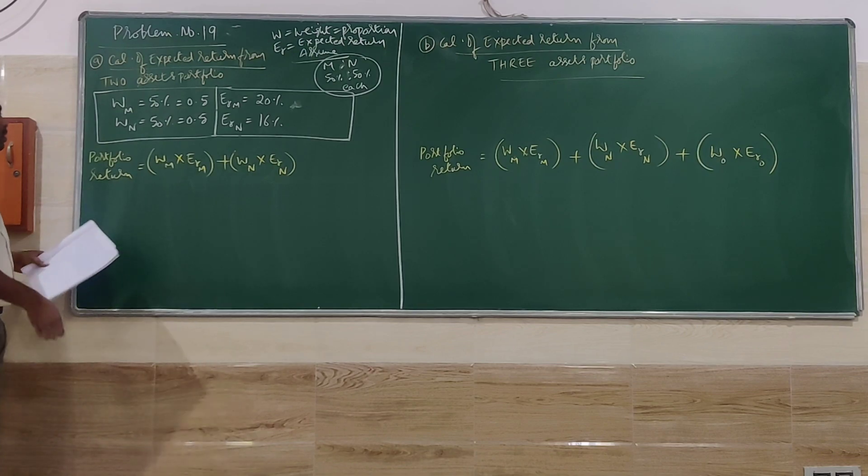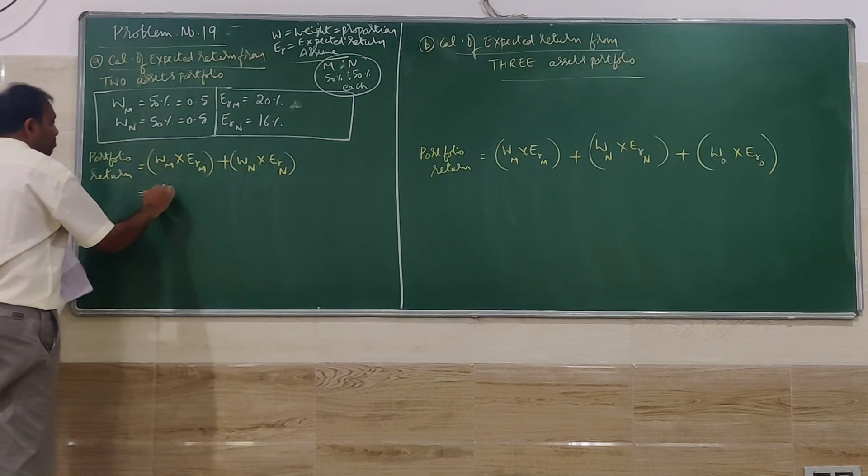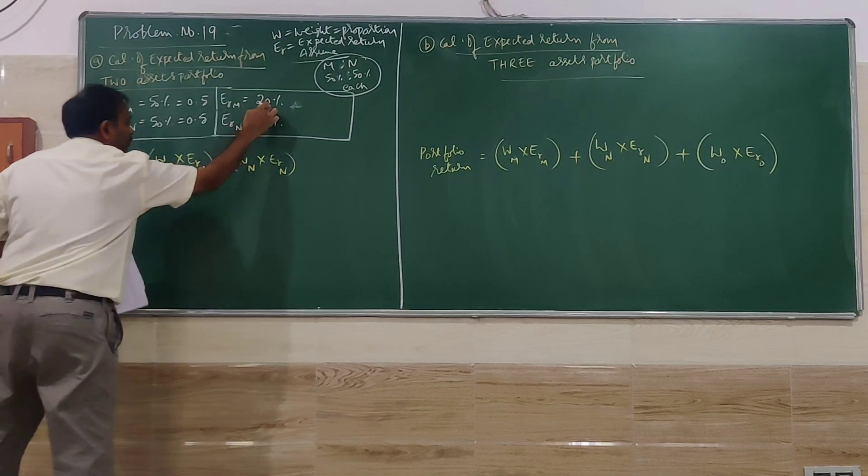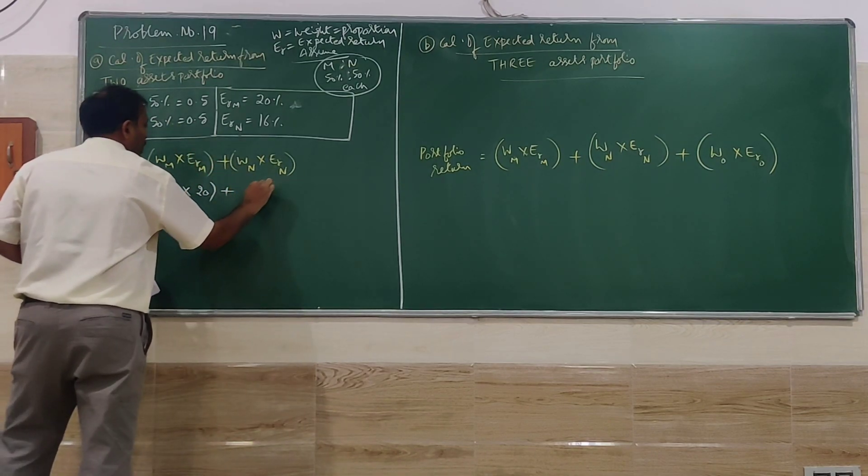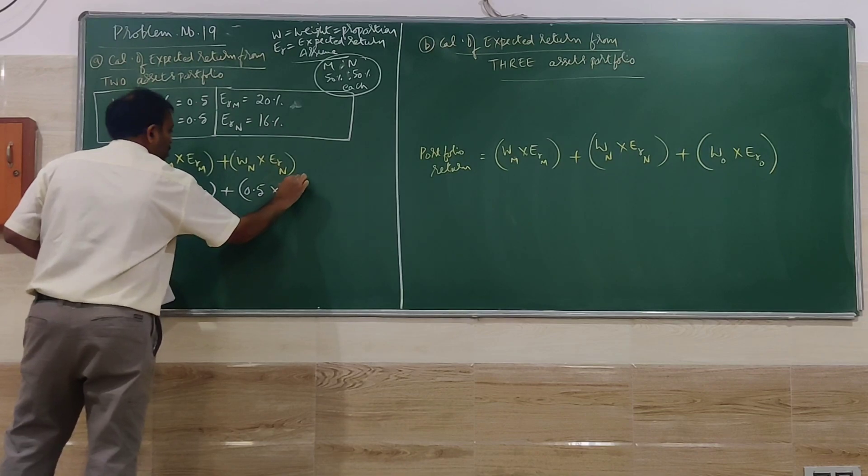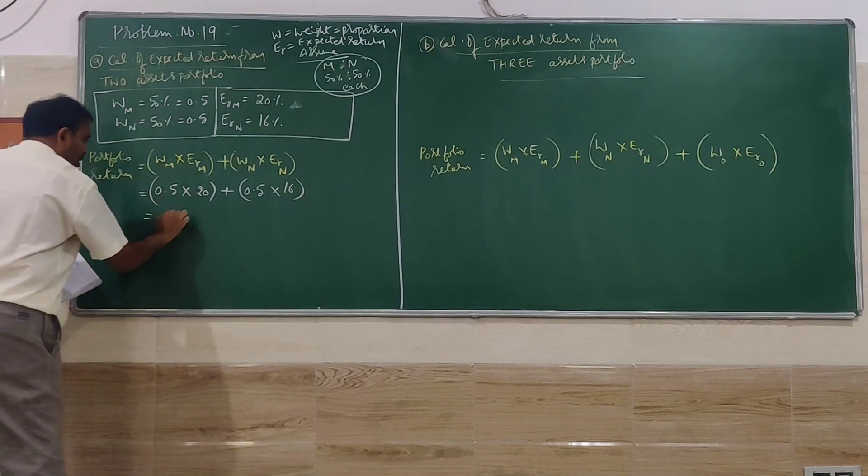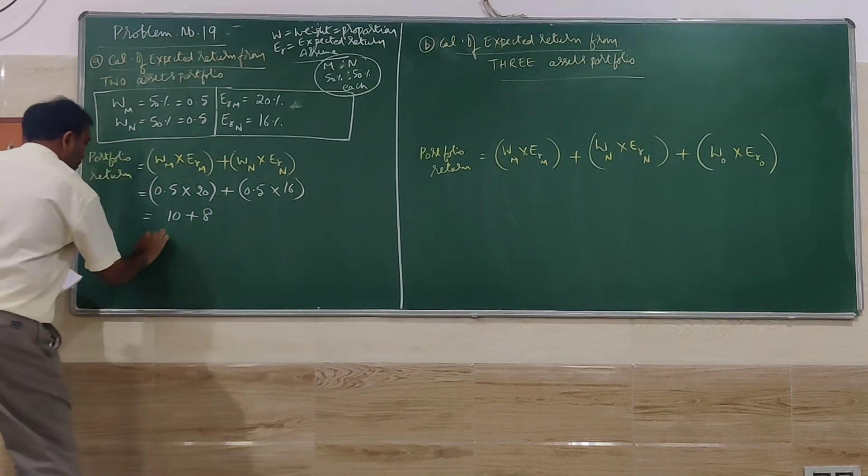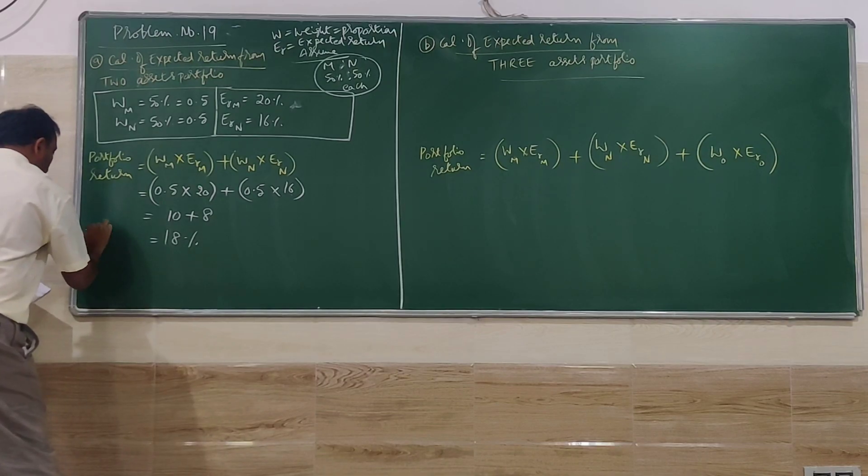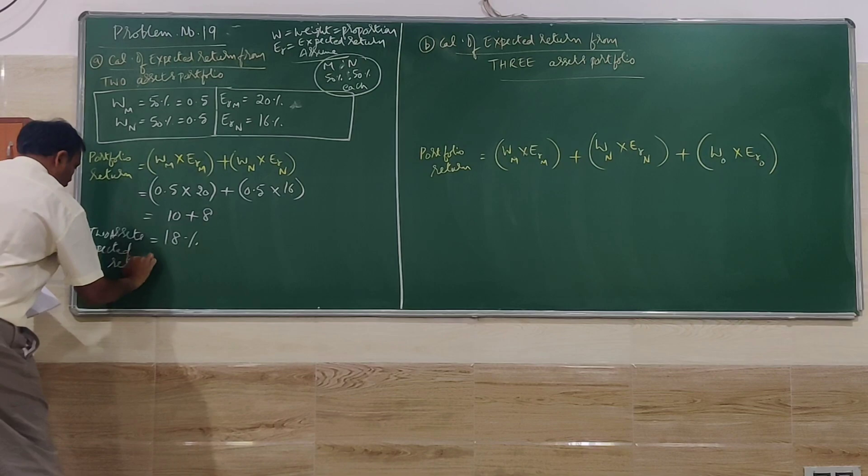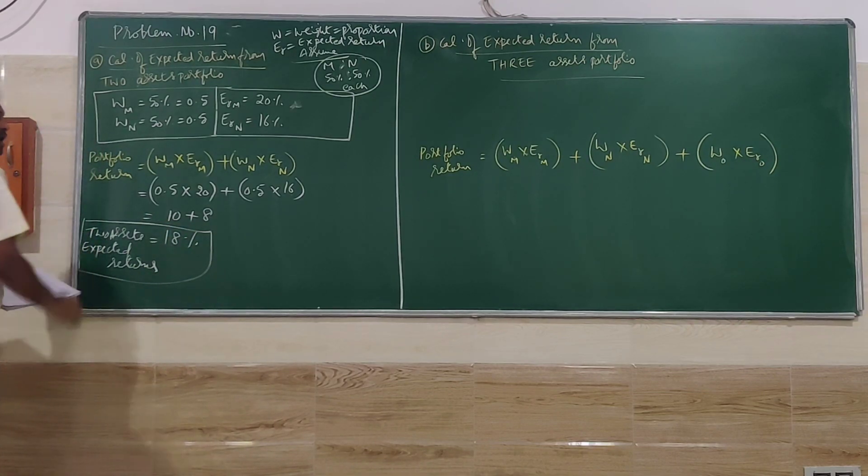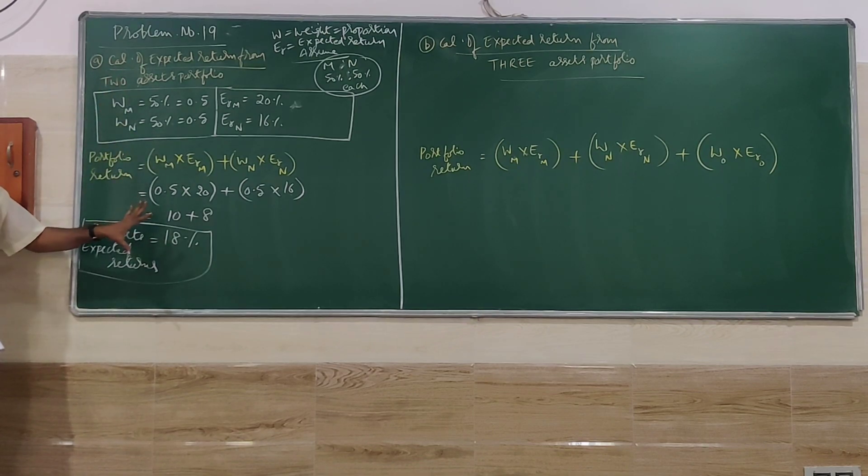The calculation is: W_M = 0.5, E-R of M = 20%; W_N = 0.5, E-R of N = 16%. So 0.5 into 20, 0.5 into 16, that is 18%. Two-asset expected return is 18%. That is the first part, question A.